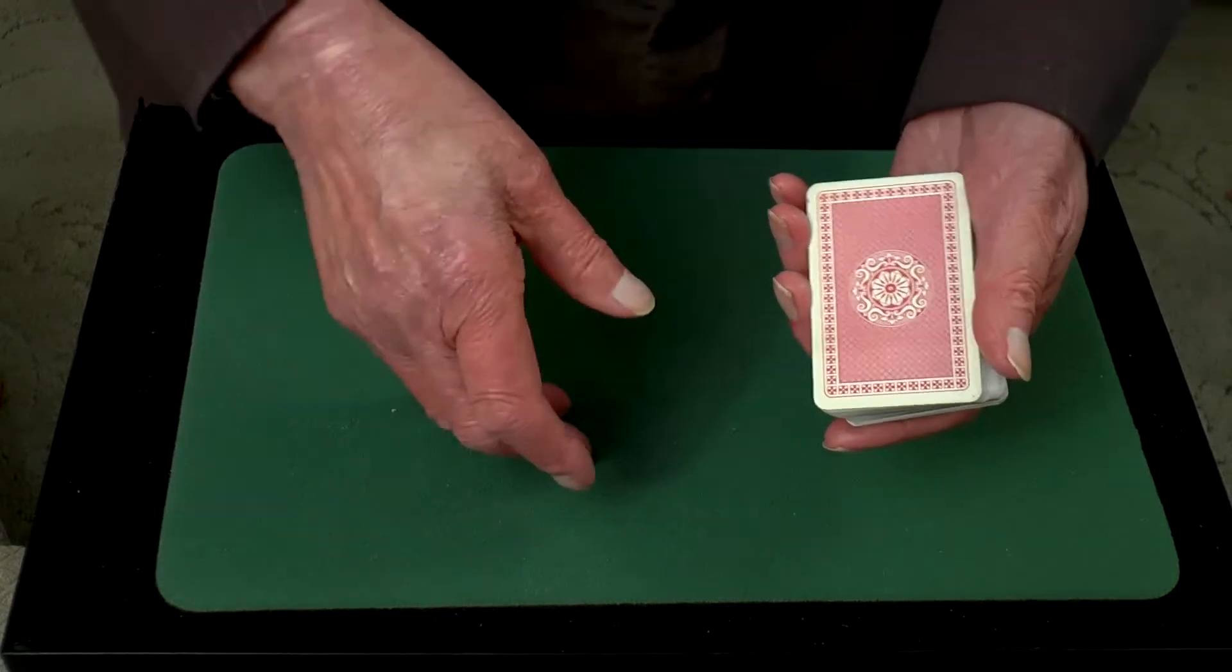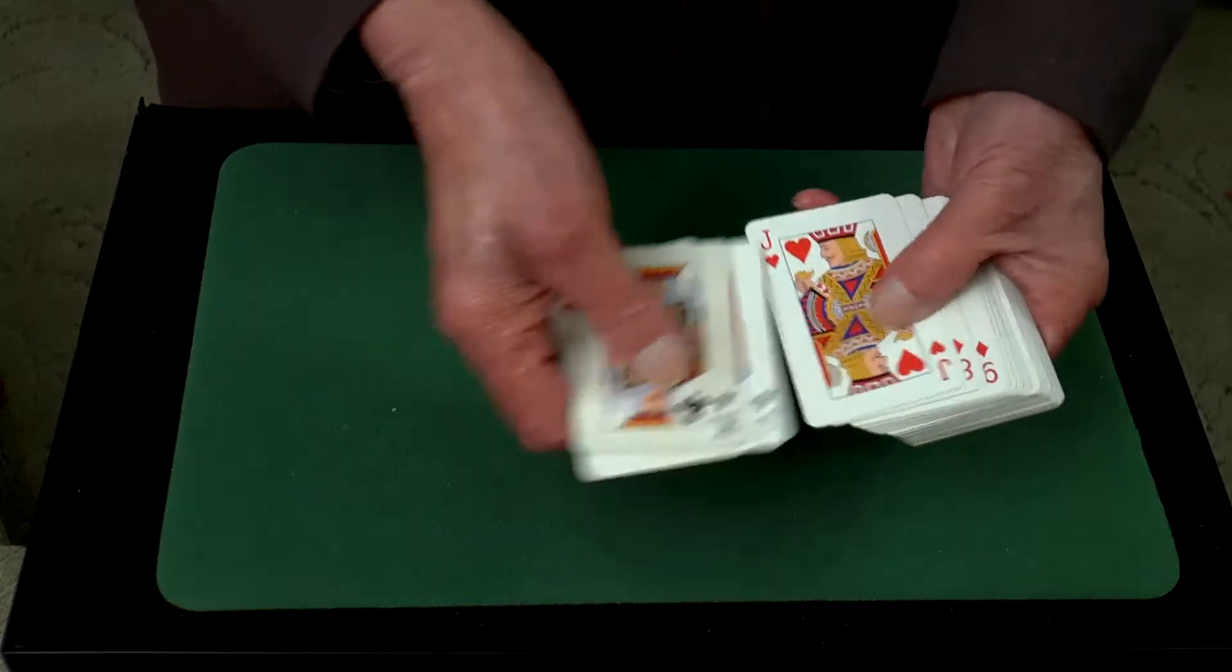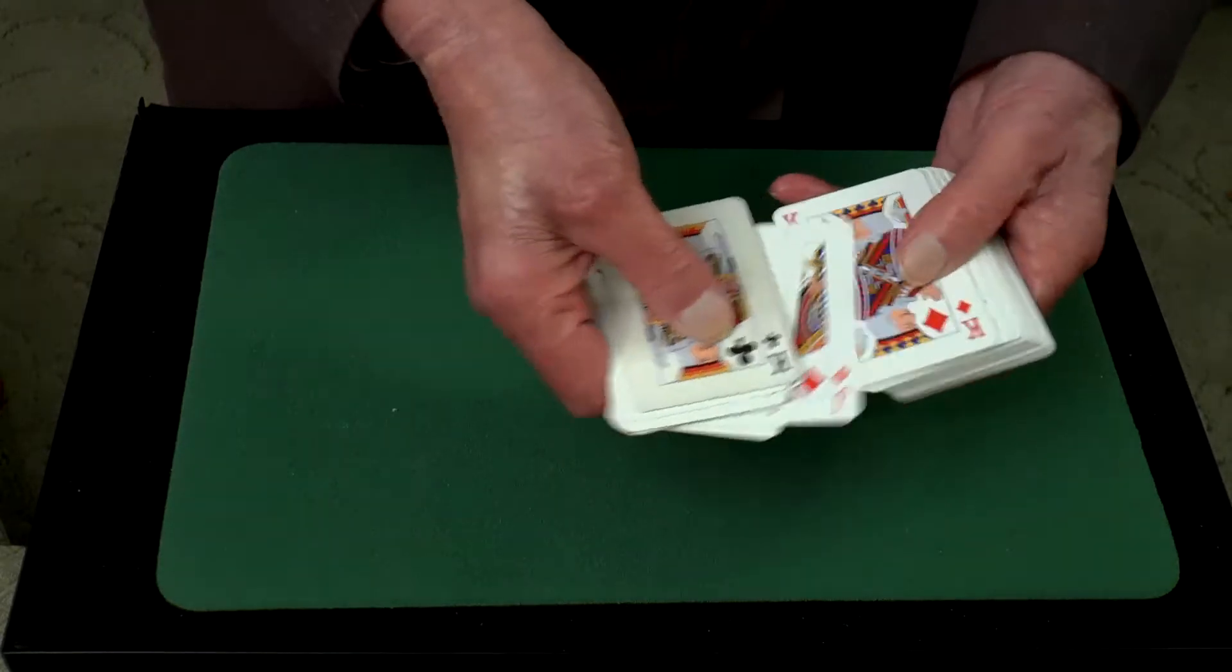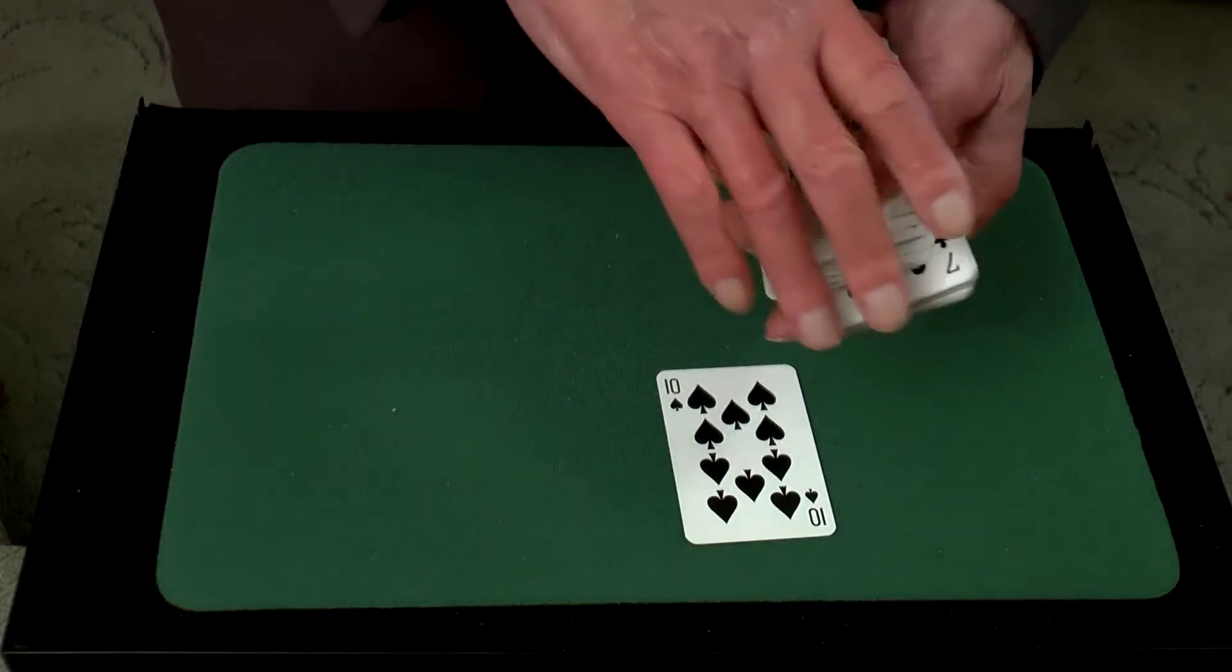They may look at you blankly or they may laugh. However, you look through the cards until you find their freely chosen card, in this case the ten of spades.